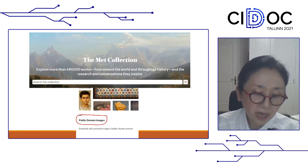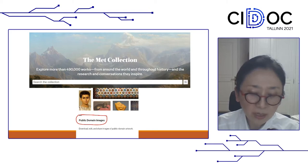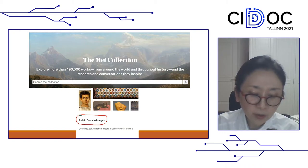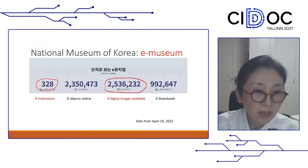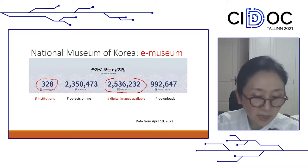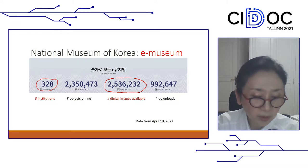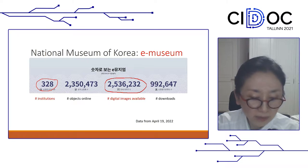In this age when online platforms have become accessible to everyone and many museums make their collections available for fair use in the public domain, digital archives or museum collections can continue to act as an important channel of inspiration for artistic production. In the case of the National Museum of Korea, it launched a project called the E-Museum, which serves as a hub to access digital images not only from the National Museum but from 328 institutions in the country. A total of 2.5 million digital images can be accessed through this hub.